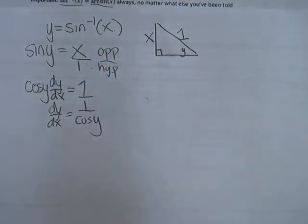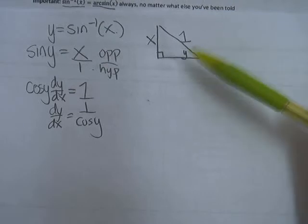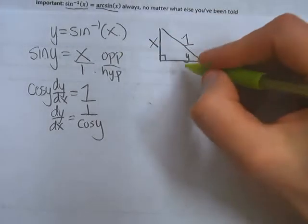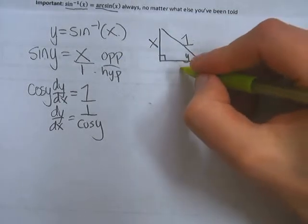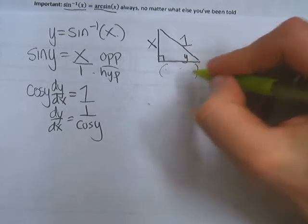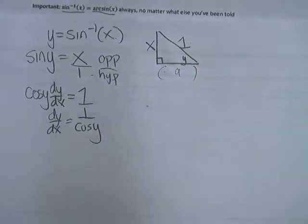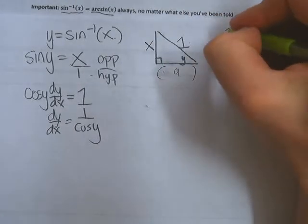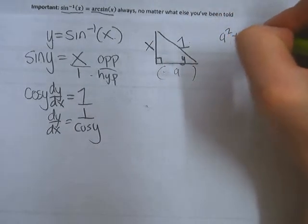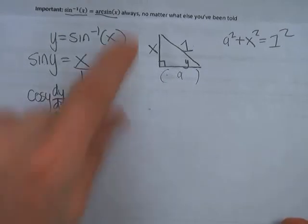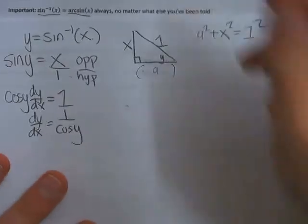And I get that dy/dx equals 1 over cosine y, but we don't want the answer in terms of y, although this is the answer. We want it in terms of x, so we have to go back and figure out what cosine of y is, and to do that, we use this triangle. Because cosine of y is just adjacent over hypotenuse in this triangle, so I just need to find the adjacent side here. So I'll call it A, for giggles. So I do A squared plus x squared equals 1 squared, that's the Pythagorean theorem, that side, that side, that side.